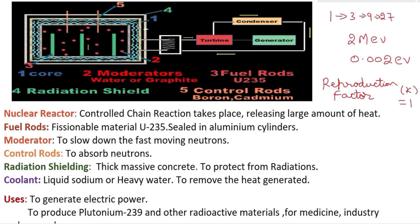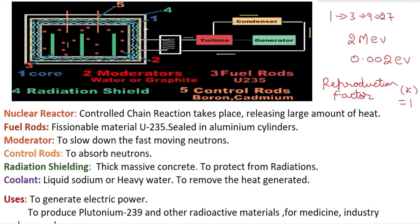These three neutrons, as they move through the core, hit the moderator — that is, they hit the water molecules or graphite molecules. What happens is they undergo elastic collision and give their energy to the moderators. Because of this elastic collision, their energy reduces from 2 mega electron volts to 0.02 electron volts — a very large reduction in energy.